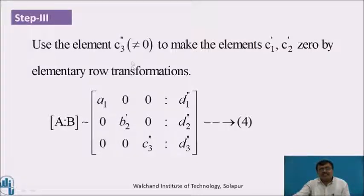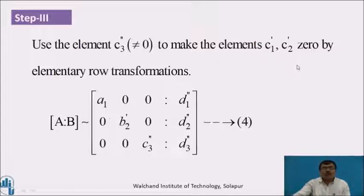Now use the element c3'' (which is not equal to 0) to make c1' and c2' equal to 0 by elementary row transformation. The matrix becomes equivalent to [a1, 0, 0, d1''; 0, b2', 0, d2''; 0, 0, c3'', d3'']. Call it equation 4.